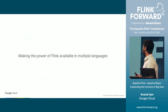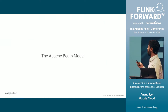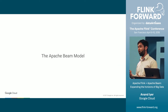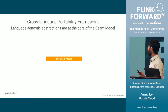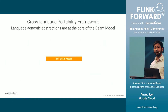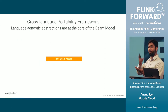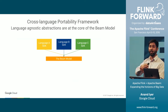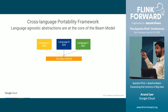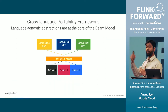Let me talk about how we're making the power of Flink available in multiple different programming languages. The key enabler is the Apache Beam model. Apache Beam is a popular open source big data SDK, and at its core is the cross-language portability framework. The cross-language portability framework consists of language-agnostic abstractions and protocols. It provides a language-agnostic representation of big data transformation pipelines, and multiple language SDKs can then be built that implement this representation. Once a Beam application is written, it can be executed on multiple execution engines that implement the Beam model.